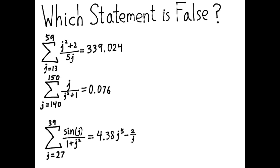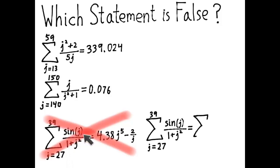Have you found the false statement? You have. It's the third statement. It's got to be false because the answer has j's in it. j is a dummy variable. It's just a placeholder for the numbers from 27 through 39. And therefore the answer can't possibly have anything to do with j. And that's how you know that it was the false statement.